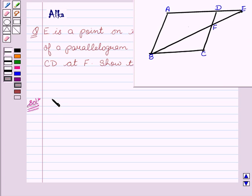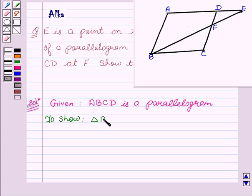We are given that ABCD is a parallelogram. We have to show that triangle ABE is similar to triangle CFB. Now let's start with the proof.